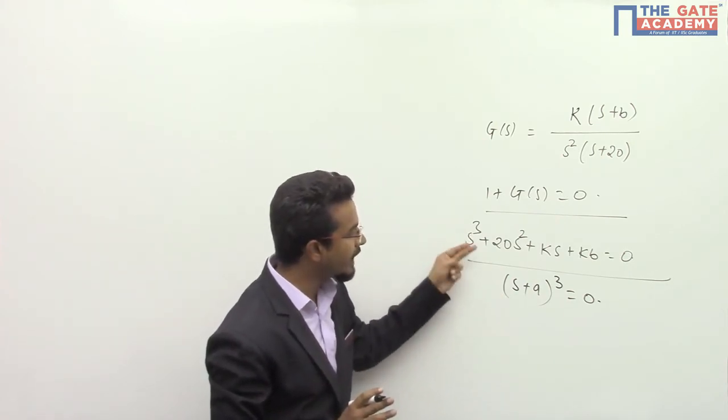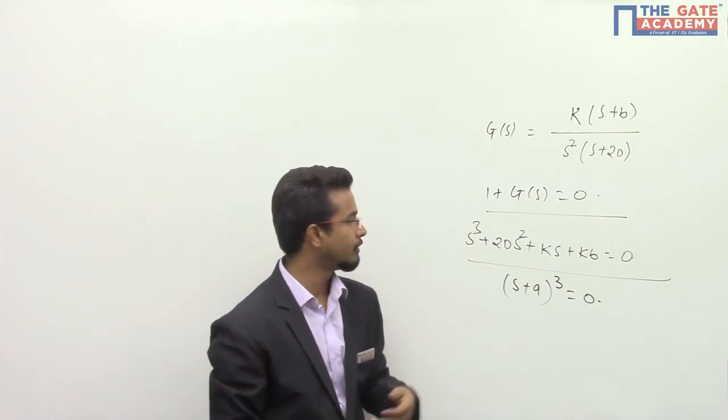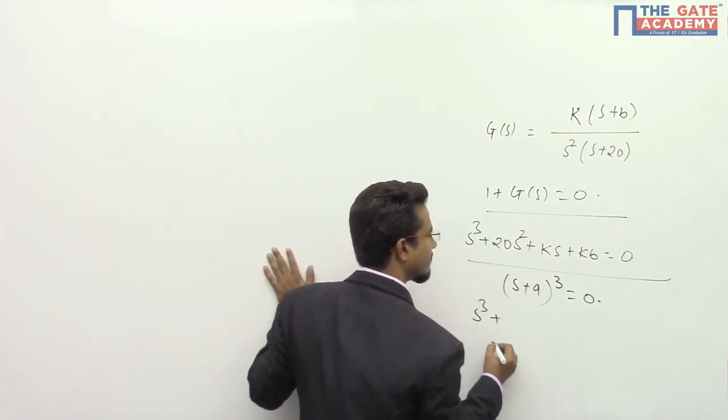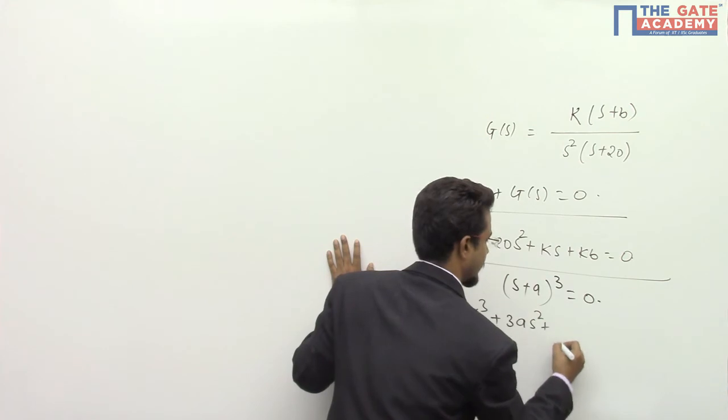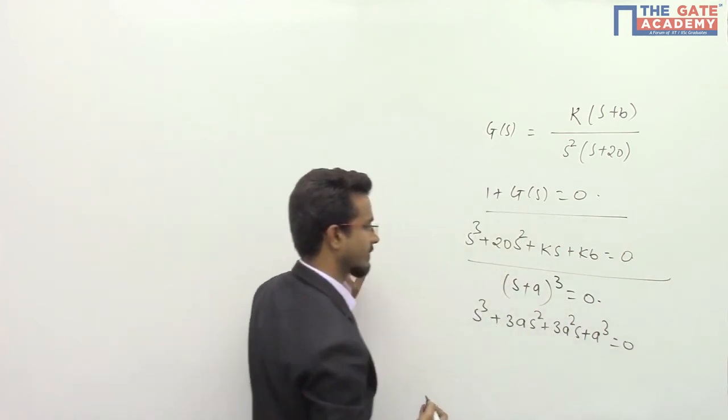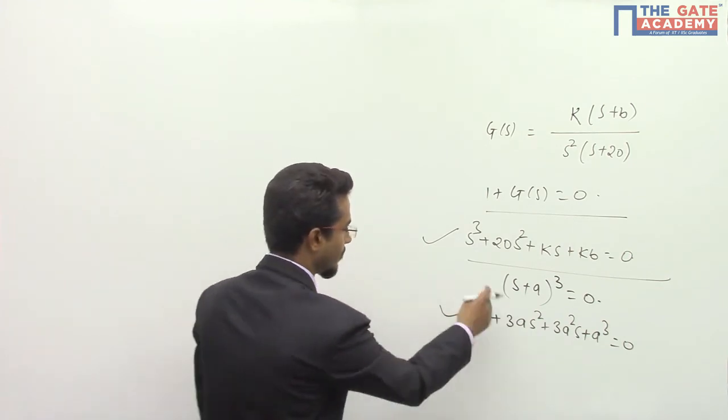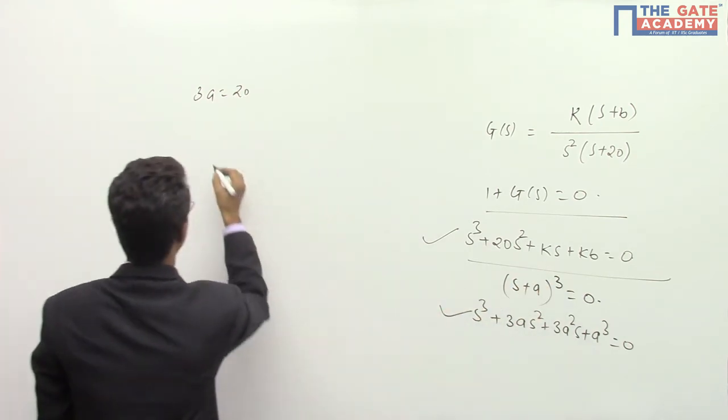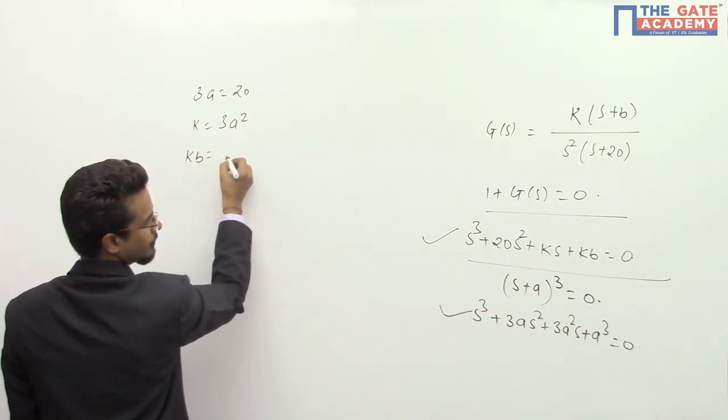If both equations will have the same relation then definitely I will get the value of all the coefficients. So if I expand this I will get s cube plus 3 a s square plus 3 a square s plus a cube equals 0. I have just applied the value here, just equate this equation with this equation. So from here I will get 3 a equals 20 and from here I will get K B equals a cube.